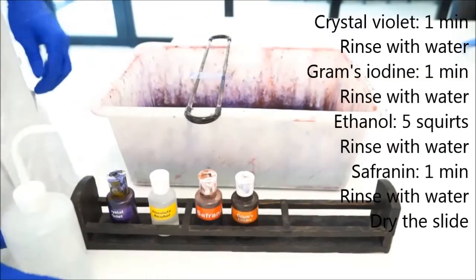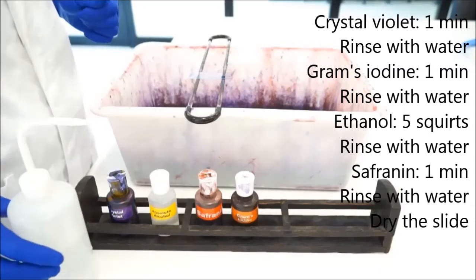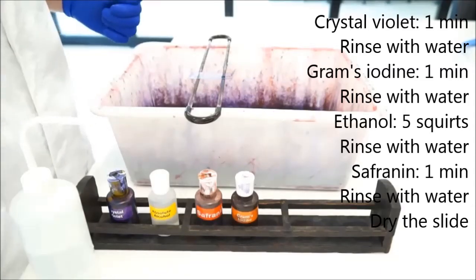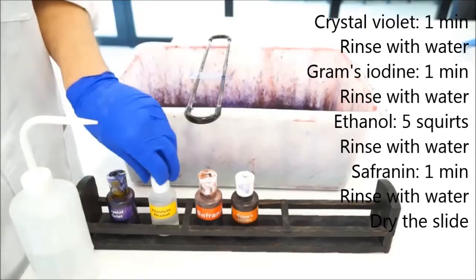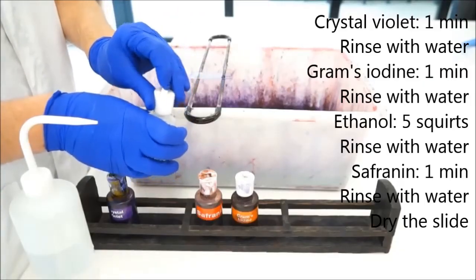The next stain is the Gram's Iodine. Let's just pretend that I've done that in the same way. I want to rush through to the very important differential part of the differential stain, which is using the Absolute Alcohol. Again, pop that lid right up.